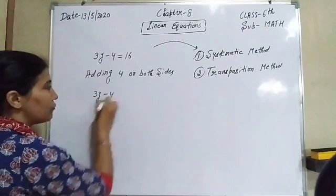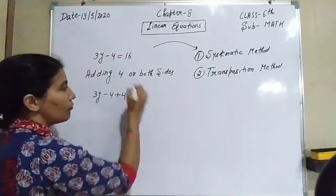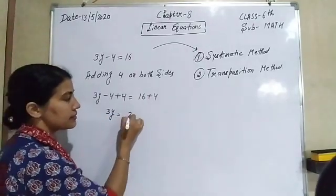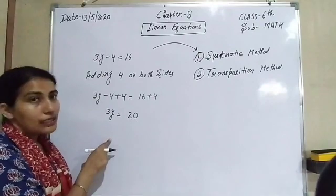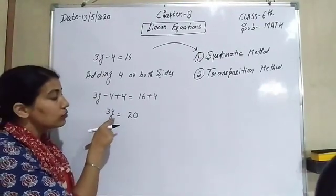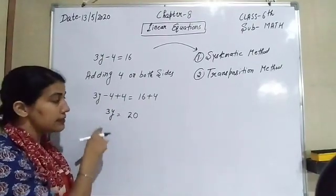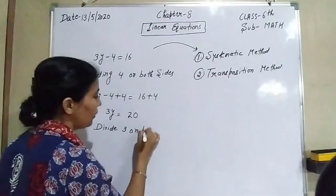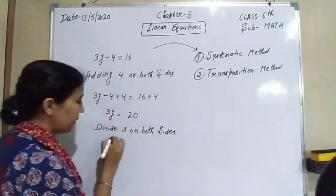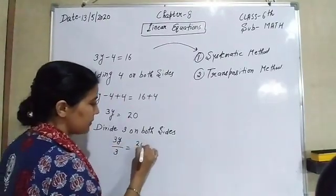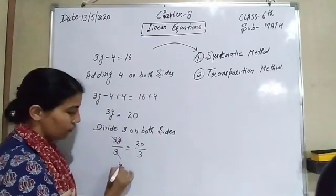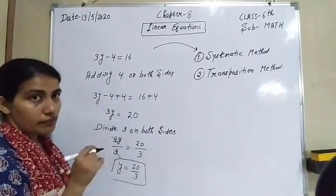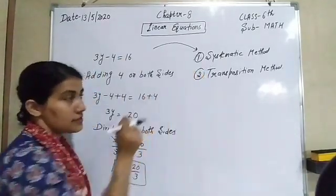Adding 4 on both sides: on the left side the negative 4 and positive 4 cancel, leaving only 3y, and on the right side 16 + 4 = 20. Now we must find only the value of y, so we remove the coefficient 3. Since 3 is multiplied with y, we divide 3 on both sides: 3y/3 = 20/3. The 3s cancel, giving y = 20/3.